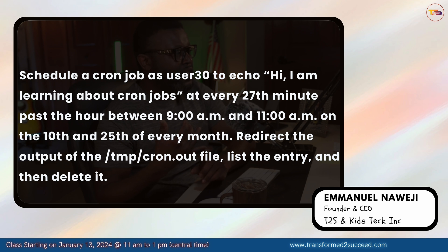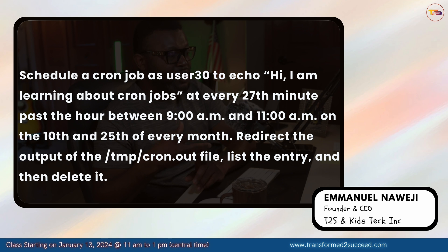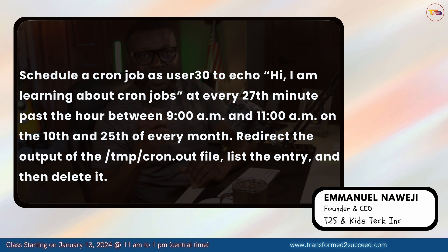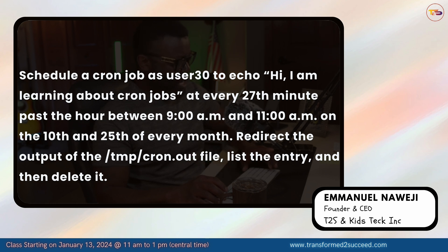That's pretty much what I wanted to share about how to create cron jobs. In this project we scheduled a cron job as user30 to echo 'Hi, I am learning about cron jobs' at every 27th minute past the hour between 9 a.m. and 11 a.m. on the 10th and 25th of every month, redirected the output to /tmp/cron.out, listed the entry, and then deleted it. Thank you for watching — God bless you and I hope to see you in the next video.